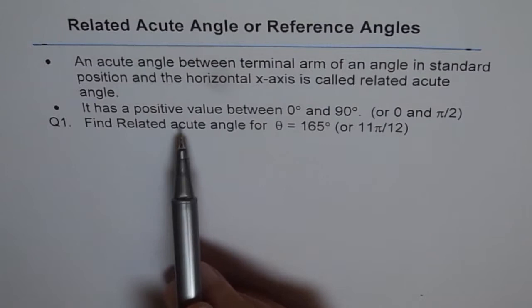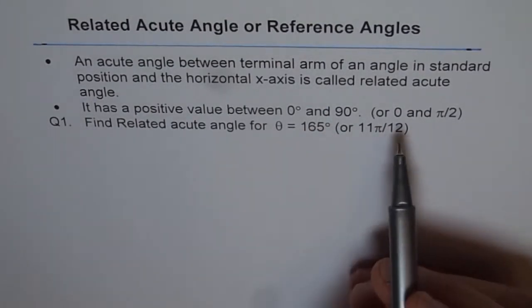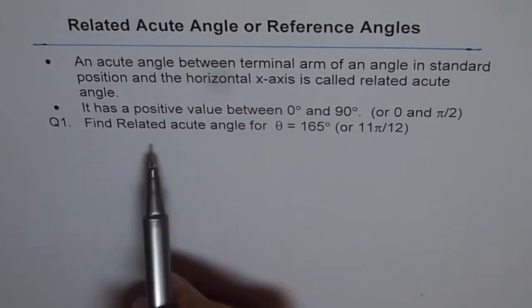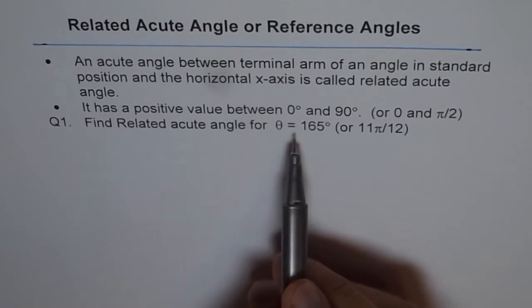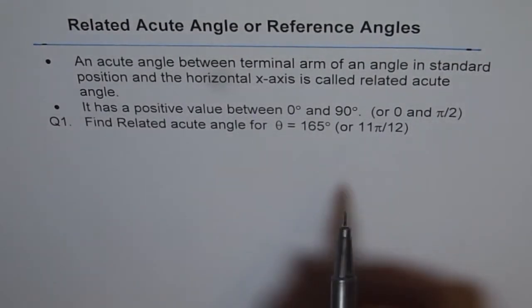It has a positive value between 0 and 90 degrees, or those who are doing in radians, 0 and π/2. Find the related acute angle for θ = 165° or 11π/12.